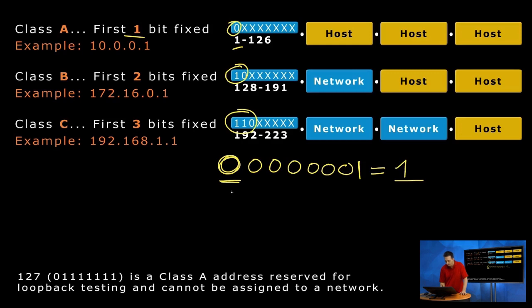But now what if I changed all those zeros to one except for the first one? So that's fixed. I can't change that. One, one, one, one. So that's one, two, three, four, five, six, seven, eight equals what now?